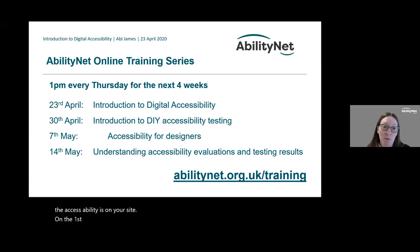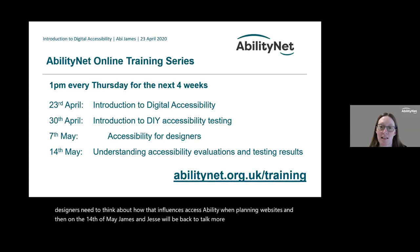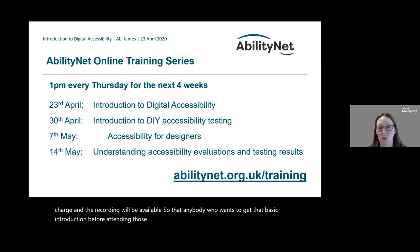On the first Thursday in May we'll be running a session for designers, led by Alice, going through what designers need to think about and how that influences accessibility when planning websites. On the 14th May, James and Jess will be back to talk about accessibility evaluations and testing results — looking at accessibility auditing and QA testing approaches. Those sessions are paid for, but this one is free of charge. We also have sessions planned throughout June and July, so please go to the URL to find out more.